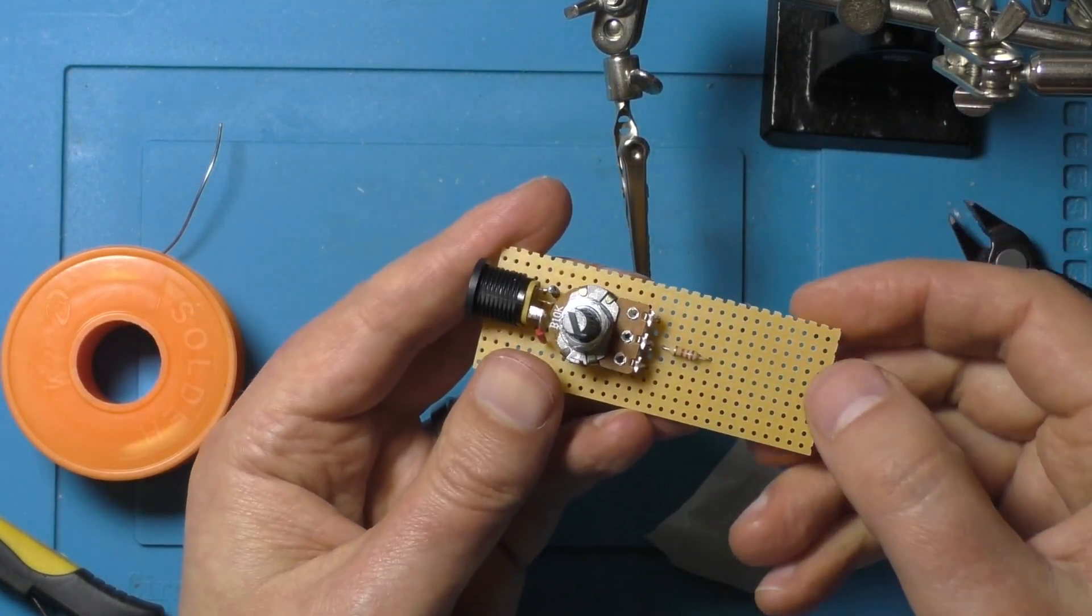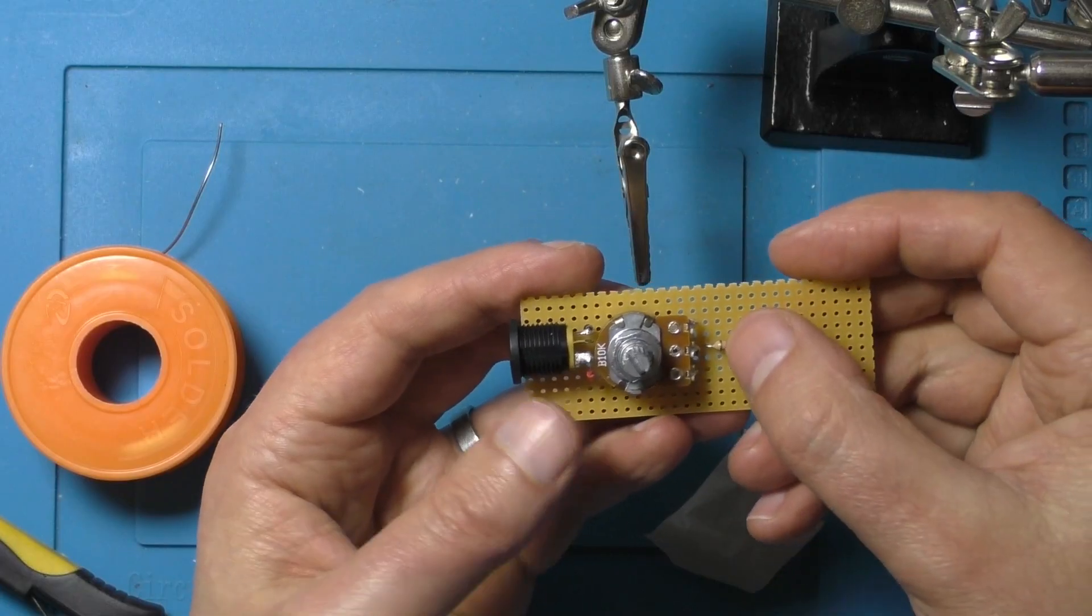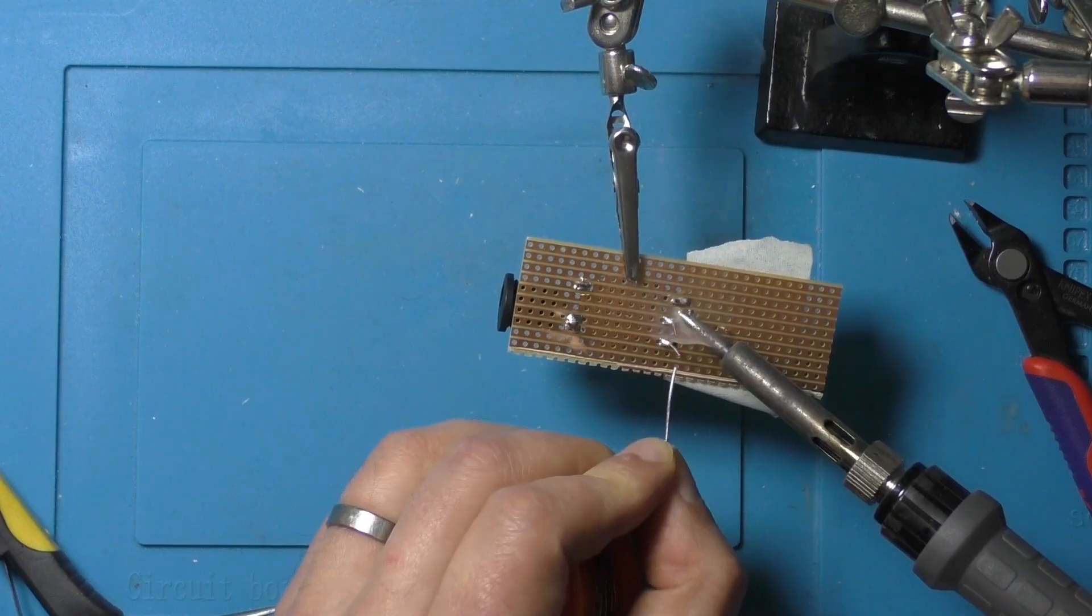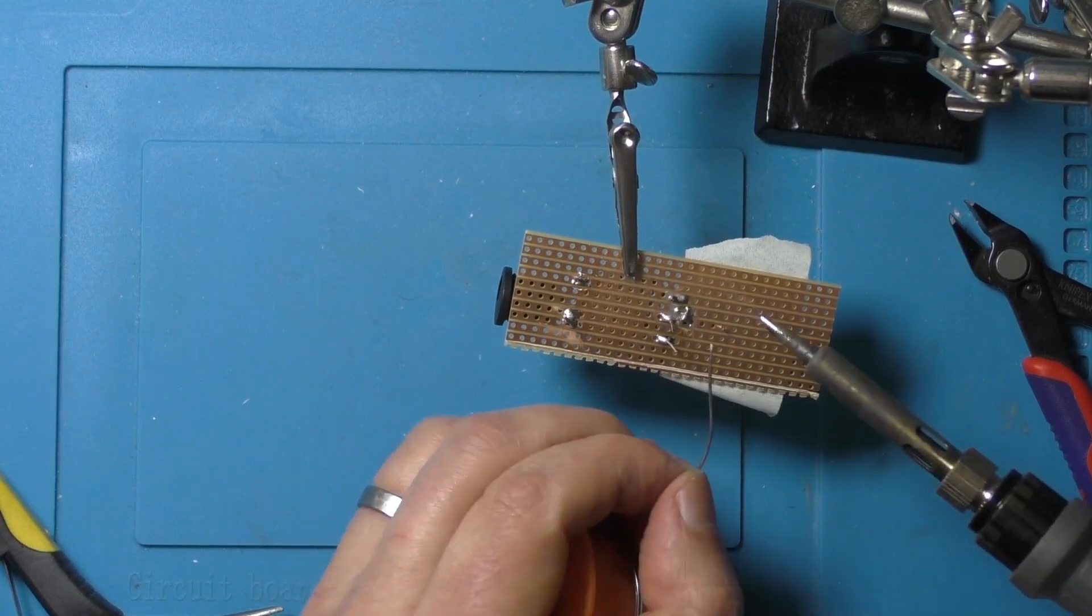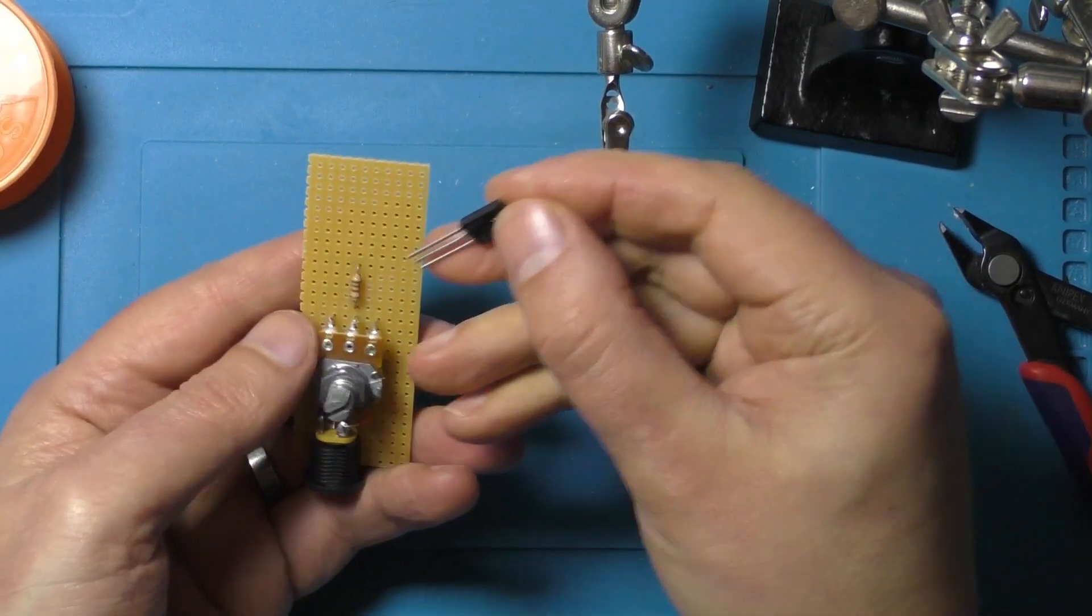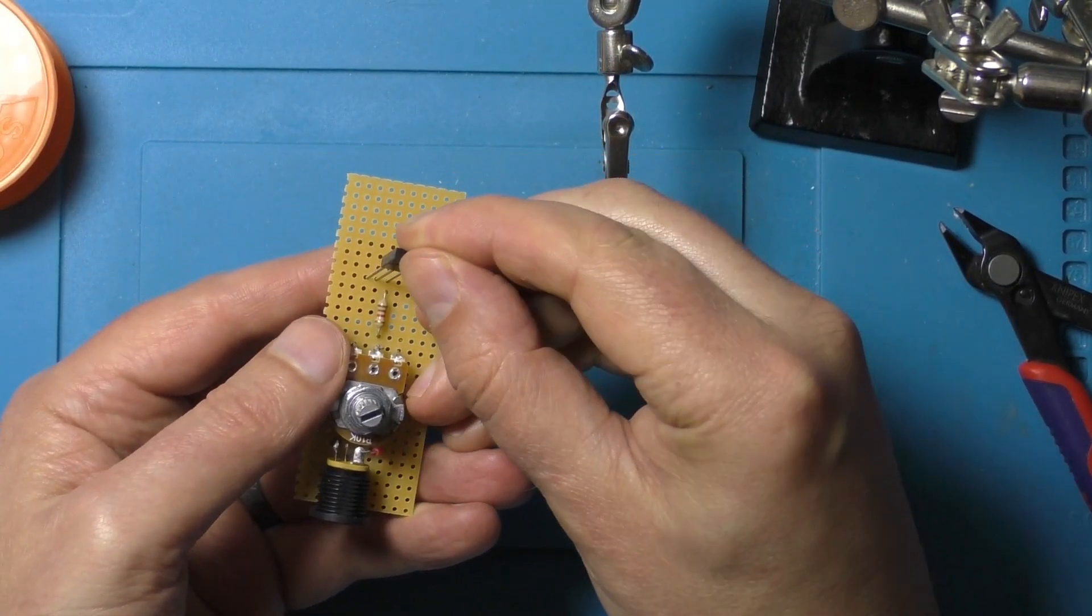Now the resistor connected to the wiper pin. And now the transistor.